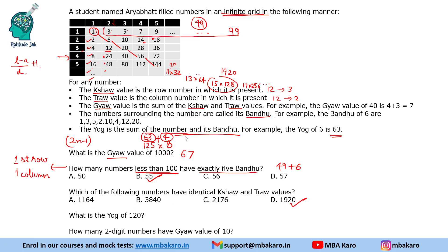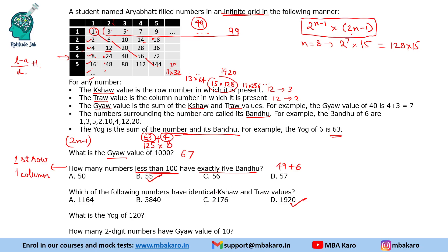If the values were very large, we could use a formula. For the nth row, the power of 2 is n−1, giving 2^(n−1). Column-wise, the odd number is 2n−1. So the number on the diagonal for row n is (2n−1) × 2^(n−1). For example, putting n=8 gives (2×8−1) × 2^7 = 15 × 128 = 1920. That is the general formula for numbers with identical Shaw and Thraw values.